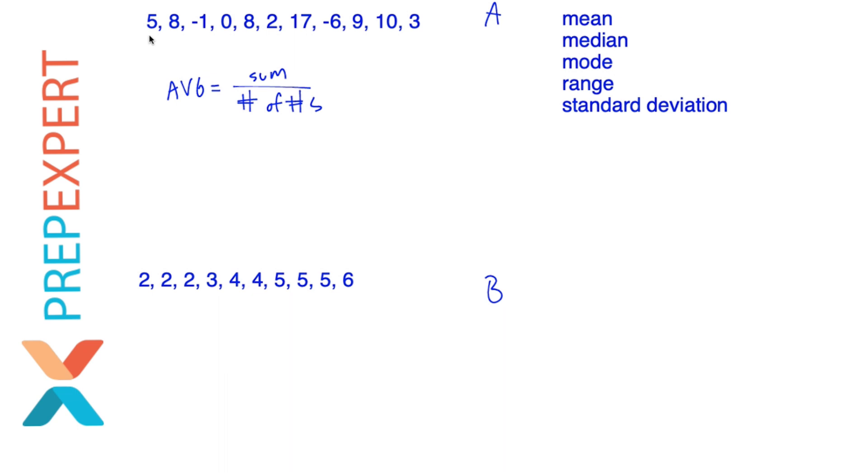First of all, how many values do I have in the set? Let's see. I've got one, two, three, four, five, six, seven, eight, nine, 10, 11. Looks like I have 11 values in my data set. So I know my number of numbers is 11. I can go ahead and plug that in right there.